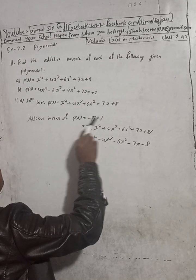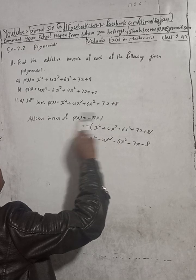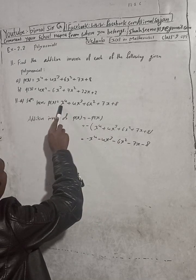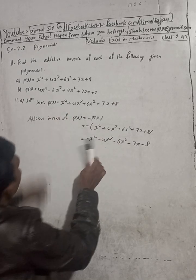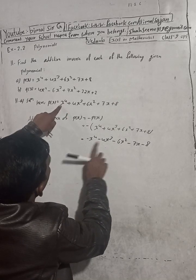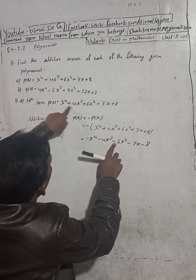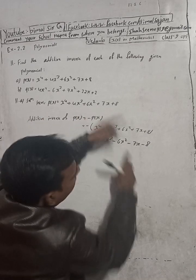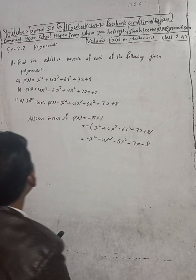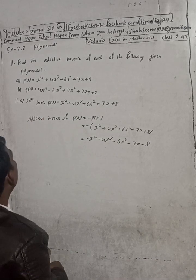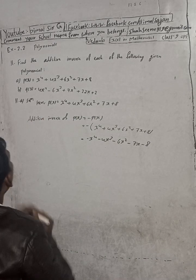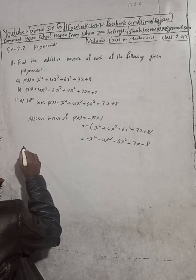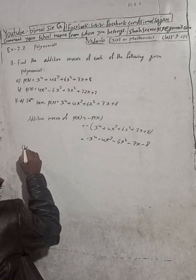Just change the sign. Now move to B number — 11b solution.